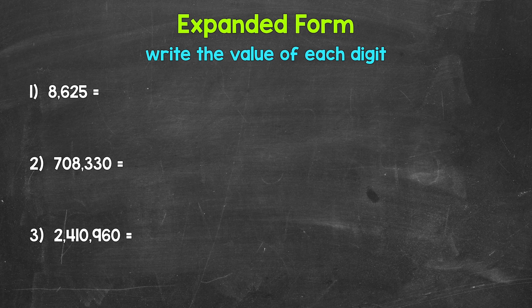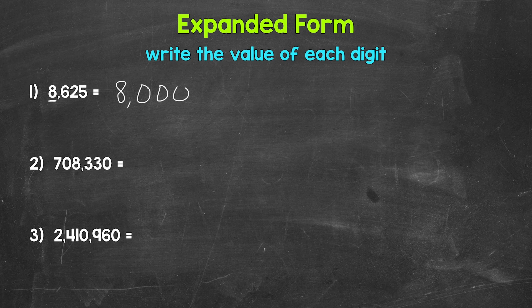Let's jump into our examples, starting with number one, where we have 8,625. To start writing a number in expanded form, we start with the digit furthest to the left and then work our way right. So we start with this eight. The eight is in the thousands place, so it has a value of 8,000. So we put 8,000 plus — we put an addition sign here because we want the sum of all of the values. We're adding the values of each digit when writing a number in expanded form, so we use addition in between.